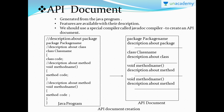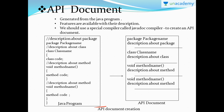API documents - these application programming interface documents are generated from the Java program itself, and all the features are available in the description. Whatever package or method you include, that description will be given for everything in an API document. We need a special compiler called javadoc to create an API document; without this compiler we cannot create one.